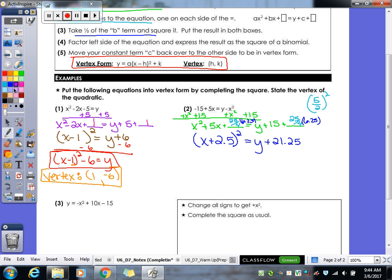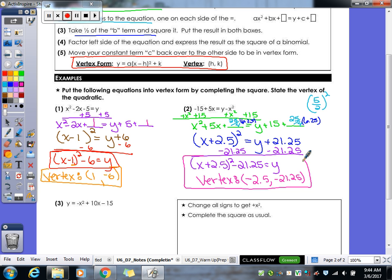So then 15 + 6.25 is 21.25. So again, we're trying to get it into vertex form, so we just got to subtract our 21.25 back over. So we get (x + 2.5)² - 21.25 = y. There's our vertex form. Now we got to state the coordinates of our vertex. Really close. -2.5 and -21.25.